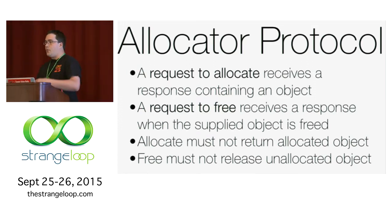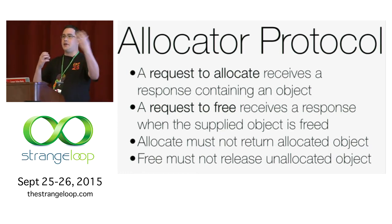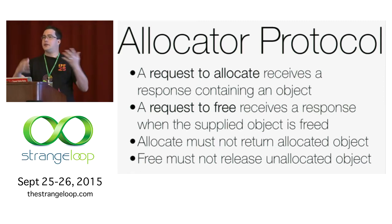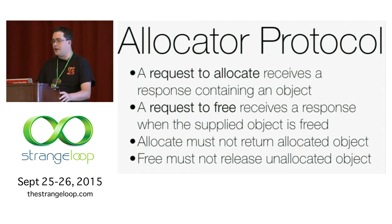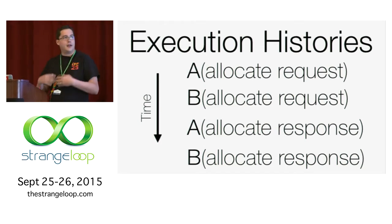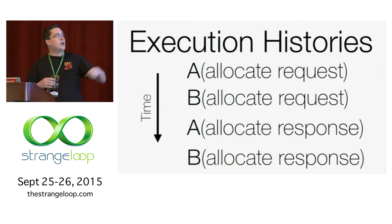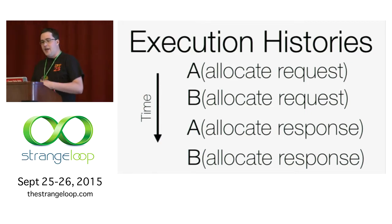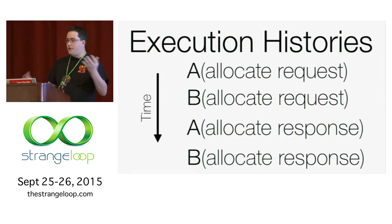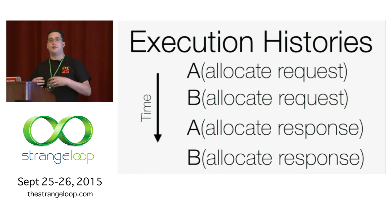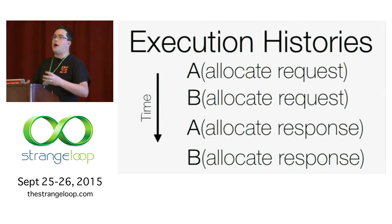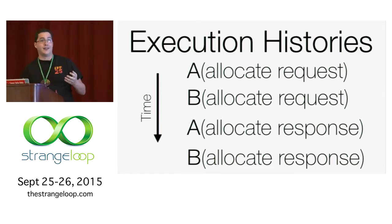We have other constraints we can define on our allocation protocol. For instance, we can't perform an allocation and have a subsequent allocation return the same object without an interstitial free, and a similar constraint holds for freeing objects. We describe this with execution histories. In this particular case, we have processes A and B issuing allocation requests, and they both receive responses. These requests and responses are interleaved, but they do have an order — the execution history lets us think about the particular ways we can order operations.